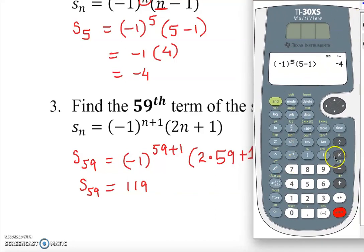We do negative. Let's do parentheses first. Negative 1 to the power 59 plus 1. Make sure you go down, open parentheses, 2 times 59 plus 1, close parentheses, enter.